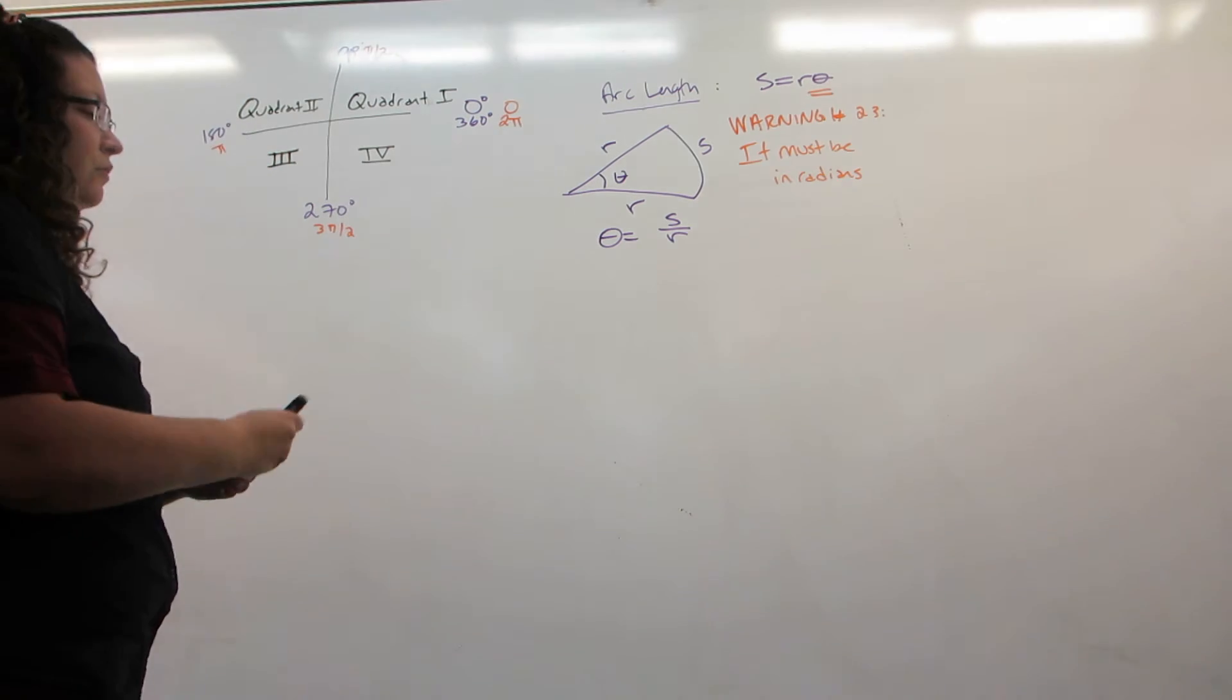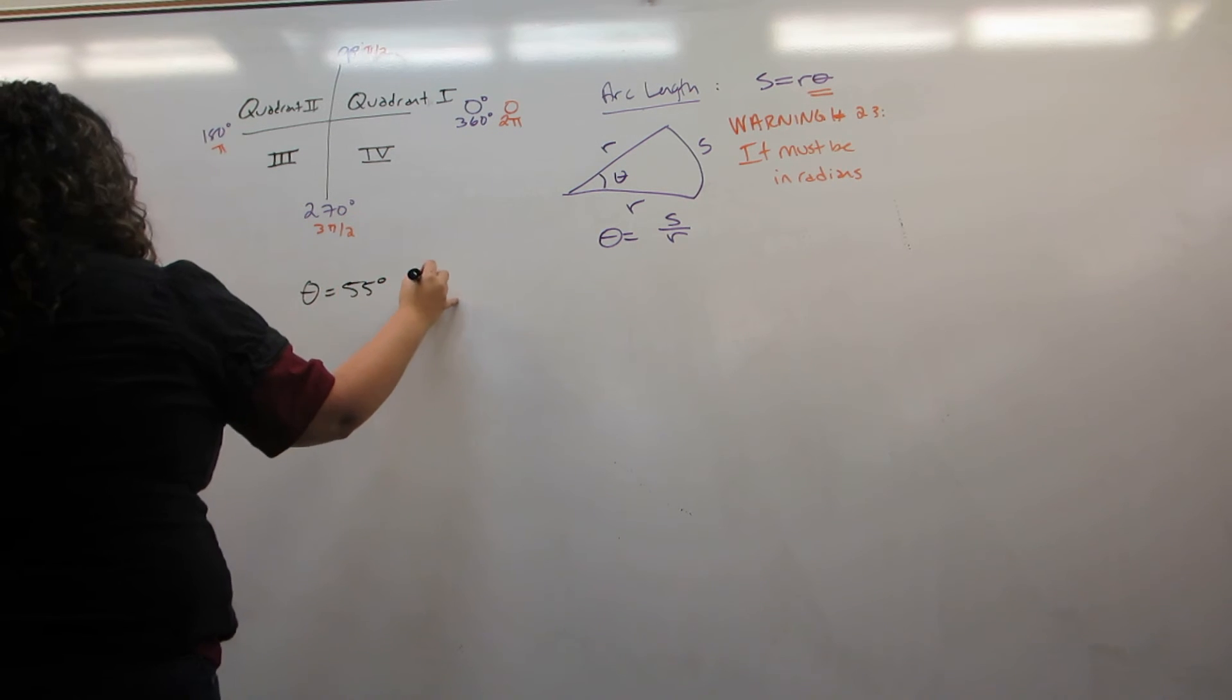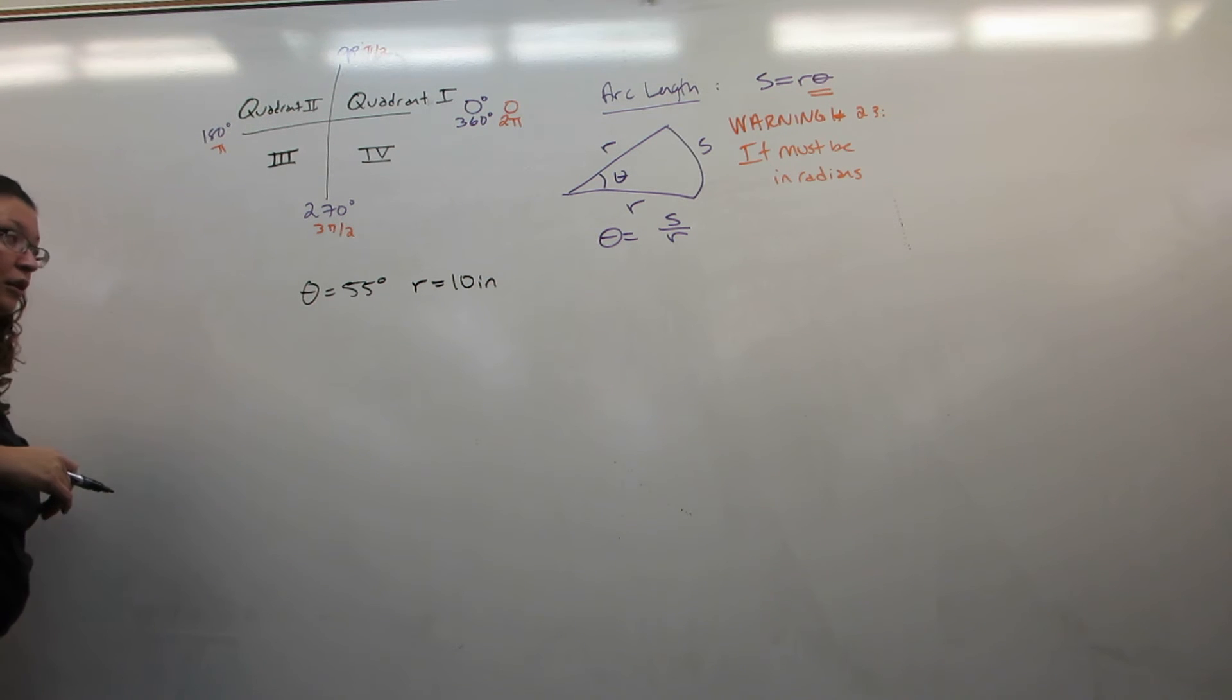So let's do two examples of this. First, suppose we have a 55 degree angle in a circle with radius 10 inches. I would like to find the arc length cut out by this angle.